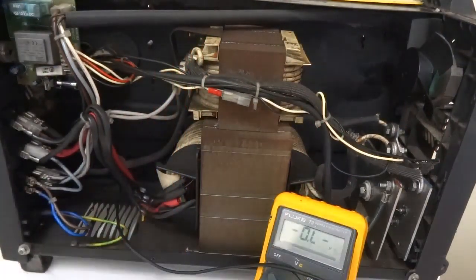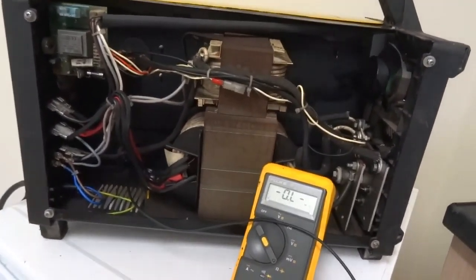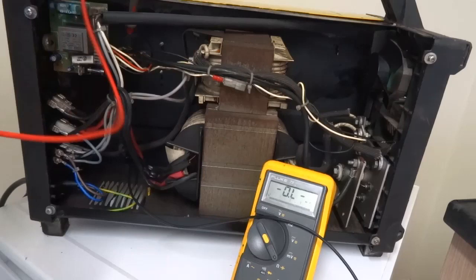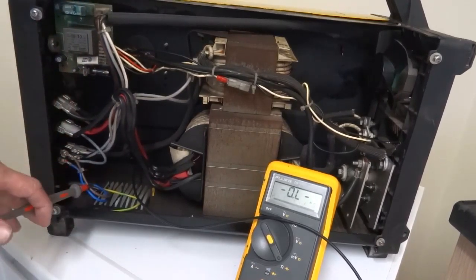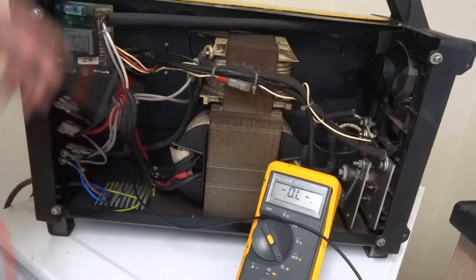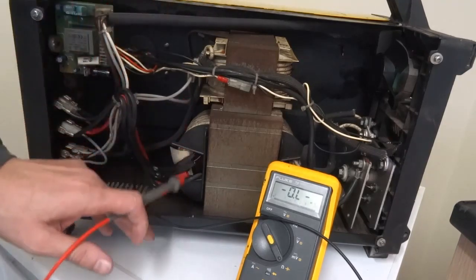So that's it really for dead testing on the MIG welder. So just to run through it again, tested the motor, tested the primary windings, the lead, main incoming lead, thermal cutout, the choke, primary side of the transformer, all the windings.